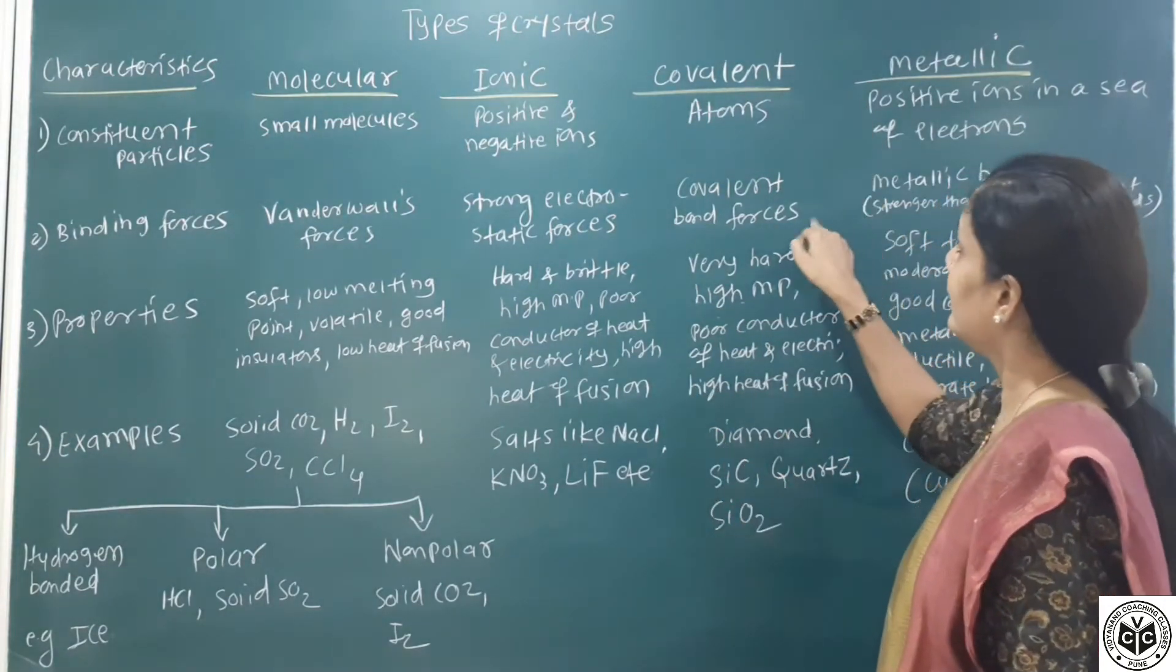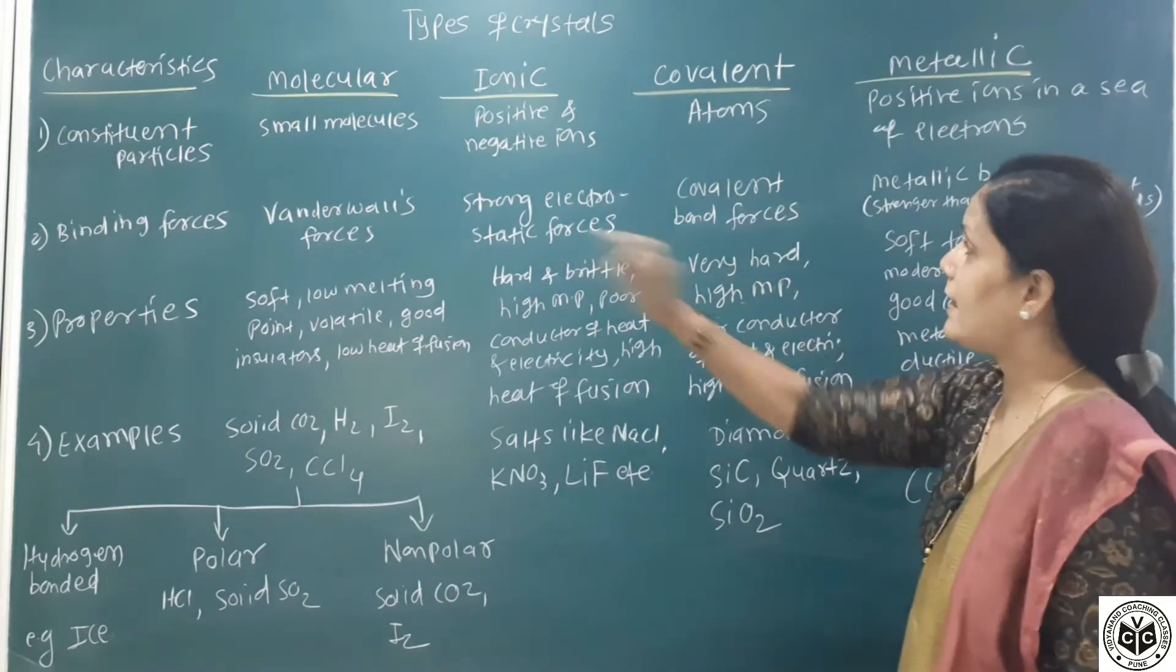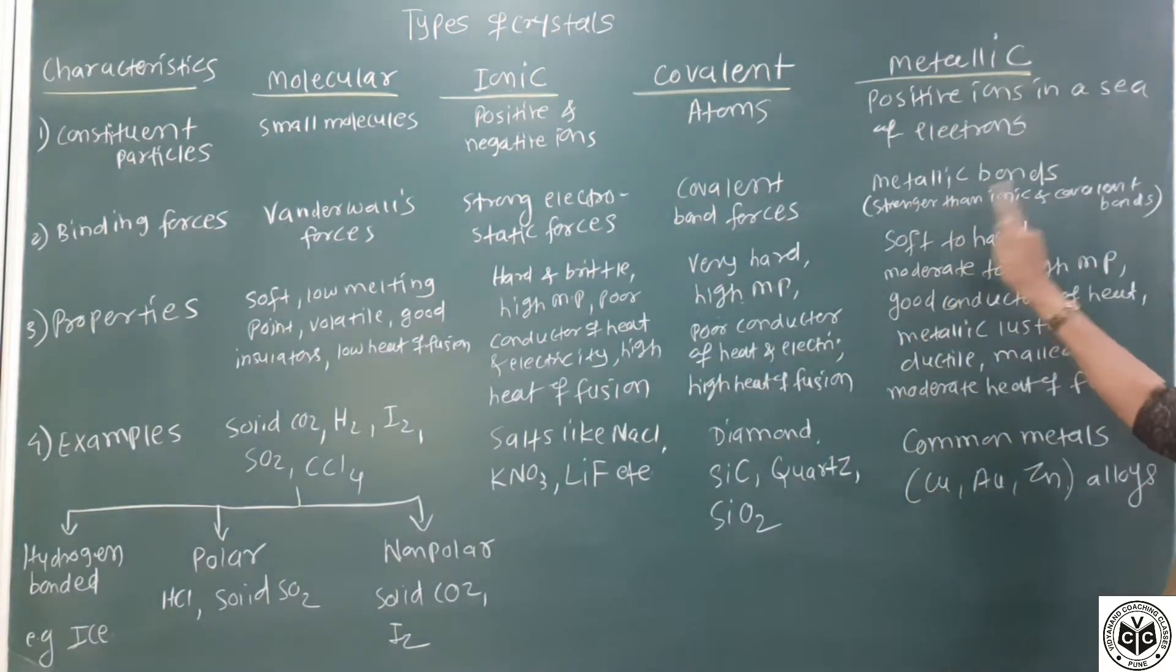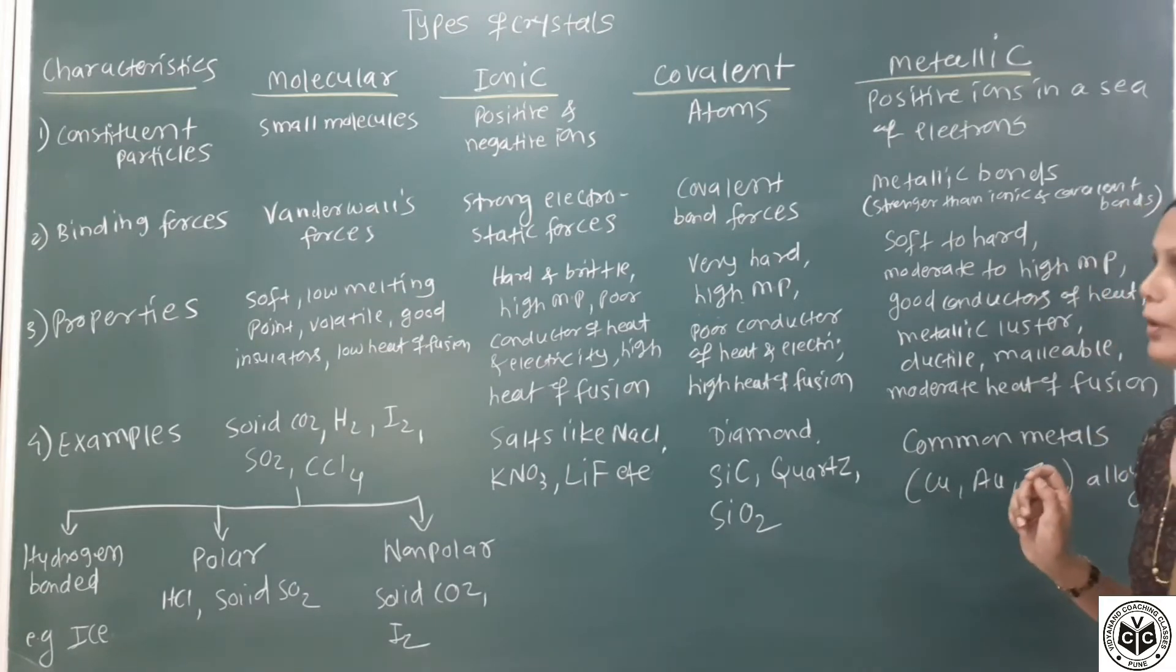In covalent solids, covalent bond forces are present, and in metallic solids, metallic bonds are present, and those metallic bonds are stronger than ionic and covalent bonds.